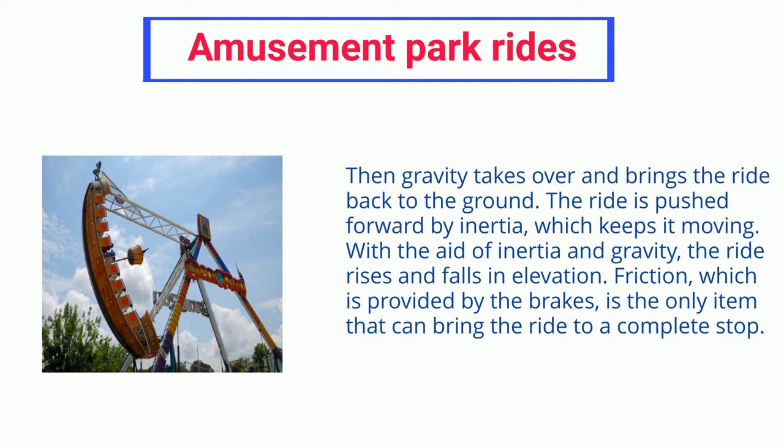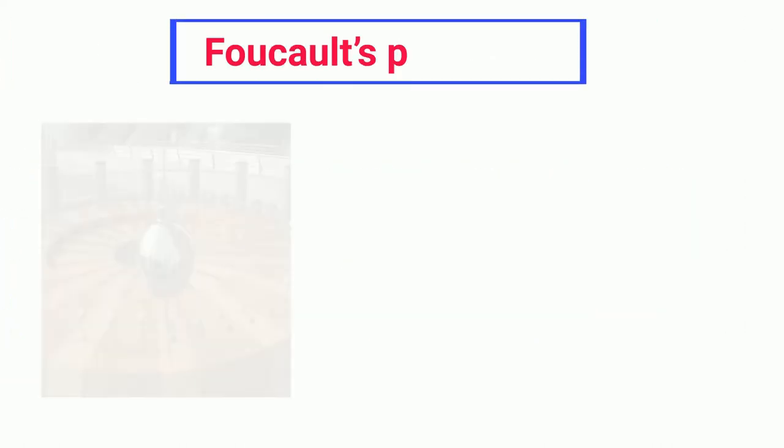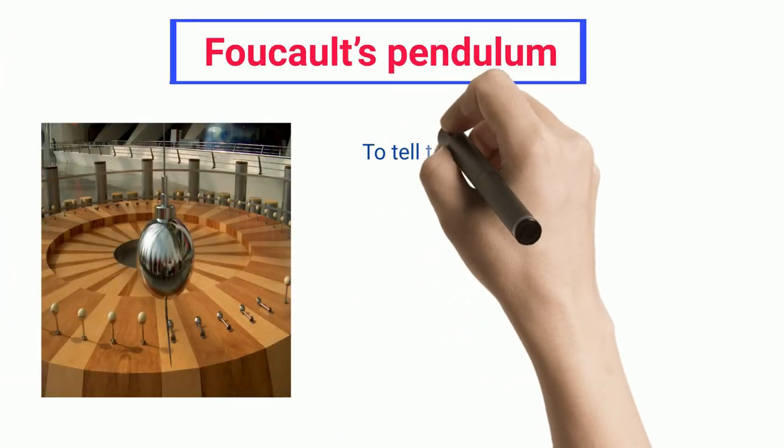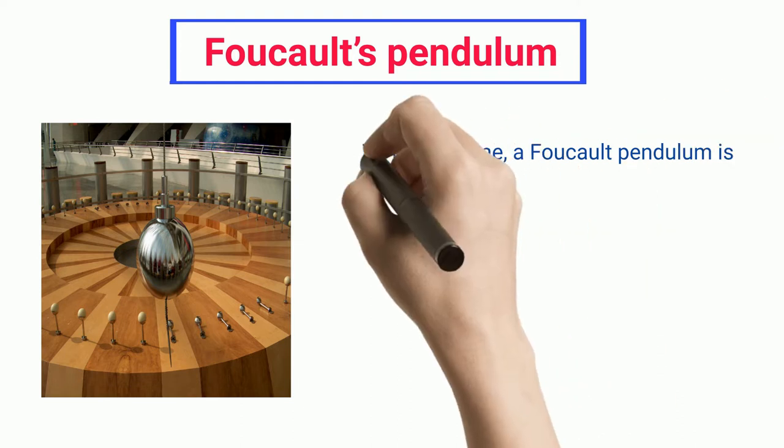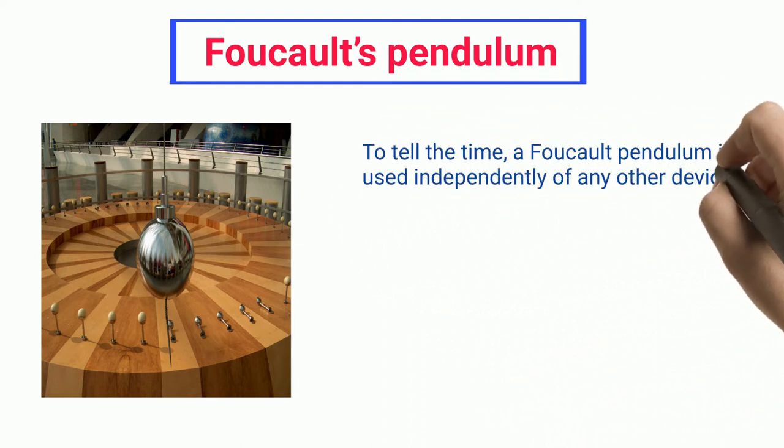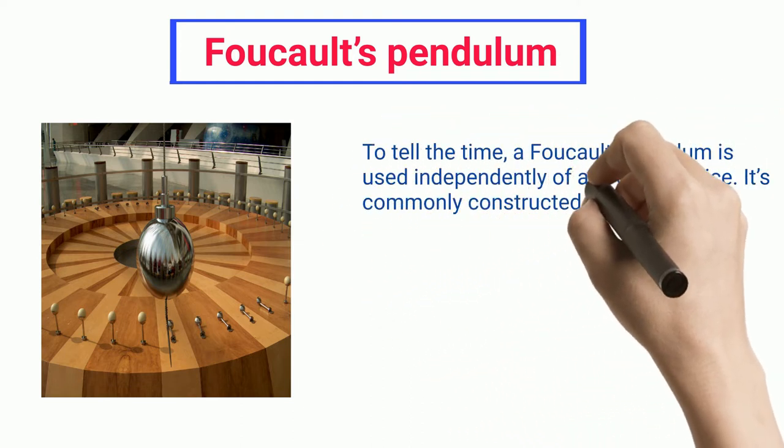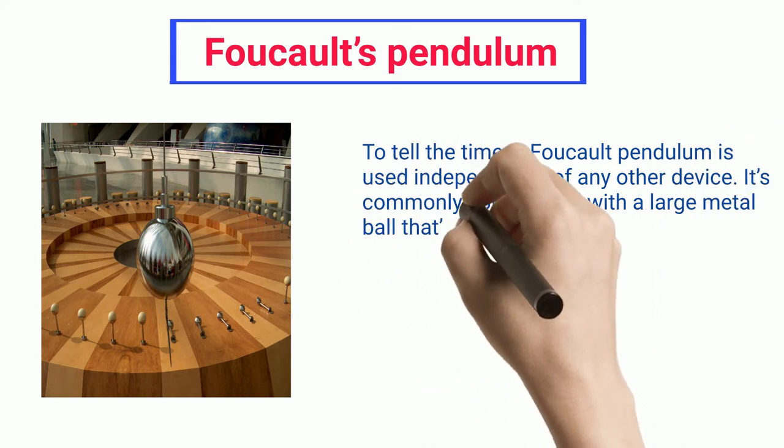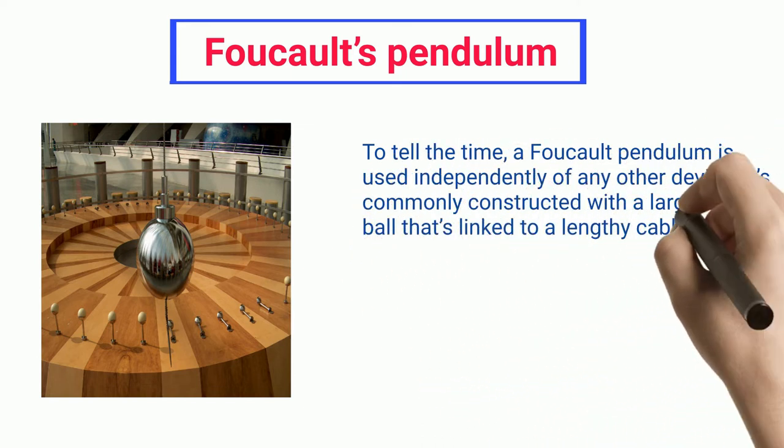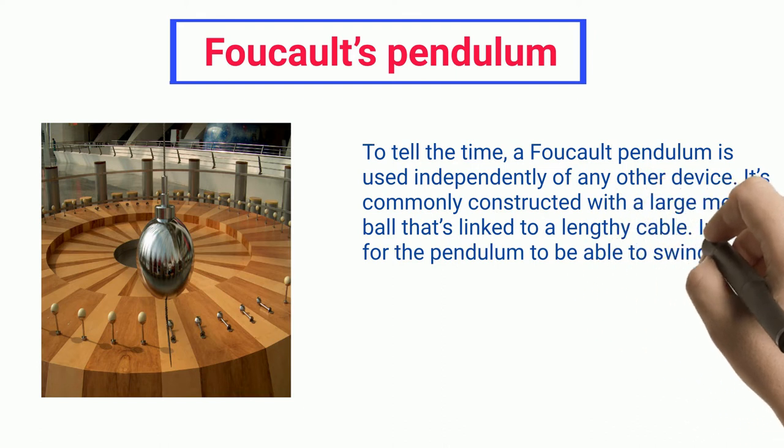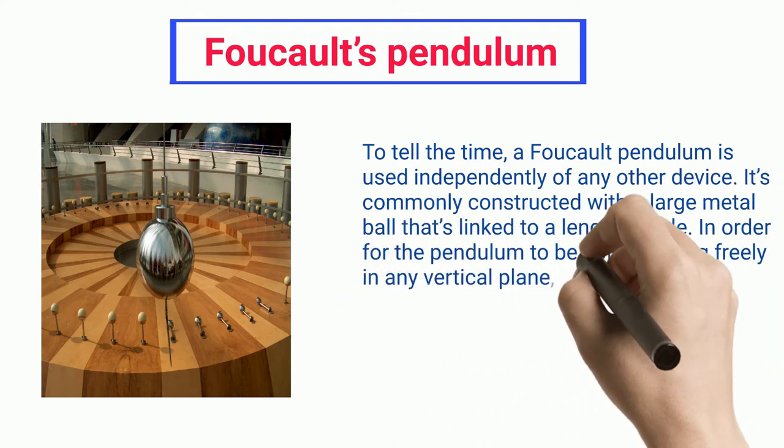Foucault's pendulum to tell the time: A Foucault pendulum is used independently of any other device. It's commonly constructed with a large metal ball that's linked to a lengthy cable. In order for the pendulum to be able to swing freely in any vertical plane, the wire must be suspended from a vantage point on the ceiling.